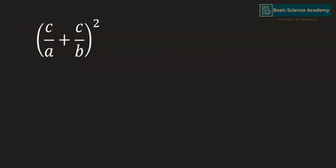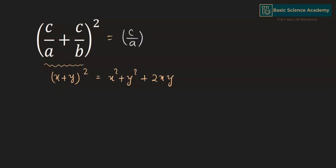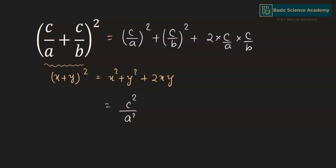Now let's start from the left side: (C/A + C/B)², which expands using (x + y)² = x² + y² + 2xy. This gives (C/A)² + (C/B)² + 2·(C/A)·(C/B), which equals C²/A² + C²/B² + 2C²/AB.